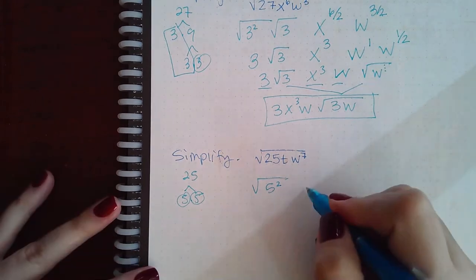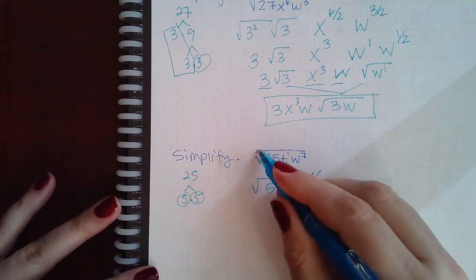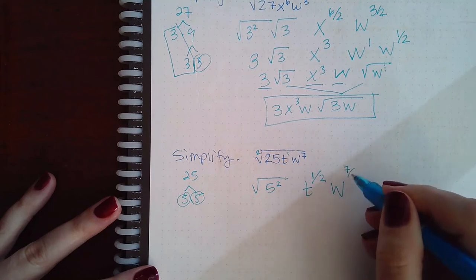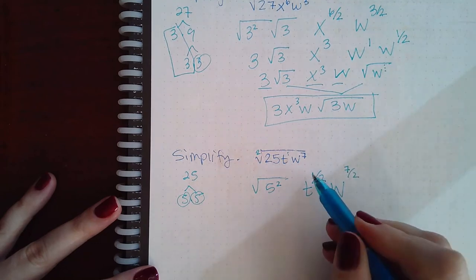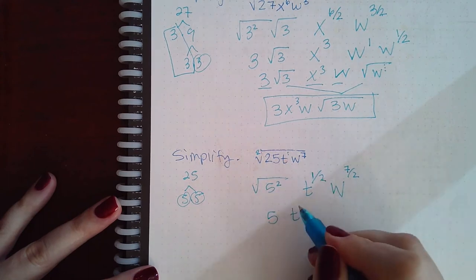Here we get t to the 1 over 2 and w to the 7 over 2. Now, 2 can go into... these are going to cancel. 2 cannot go into 1, so this just stays as is.